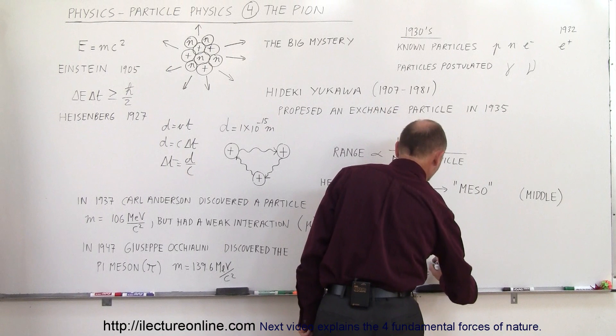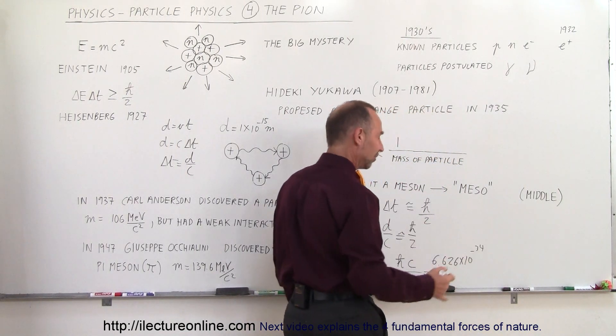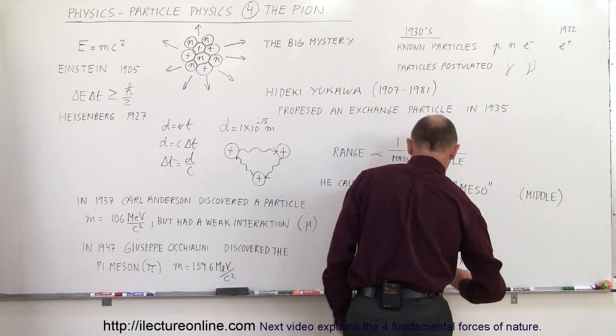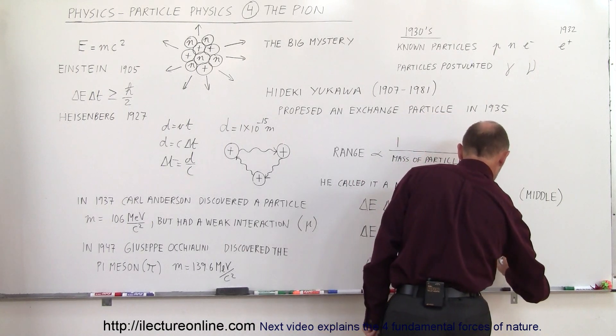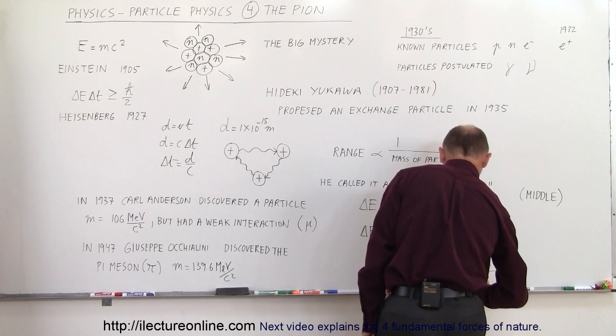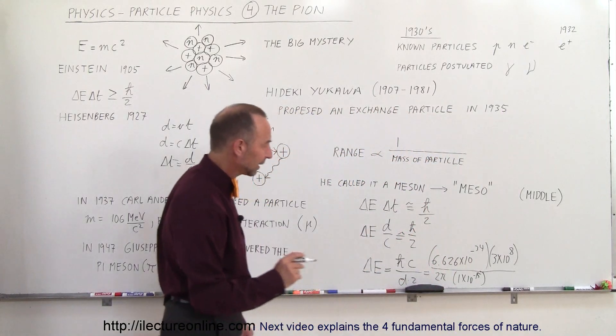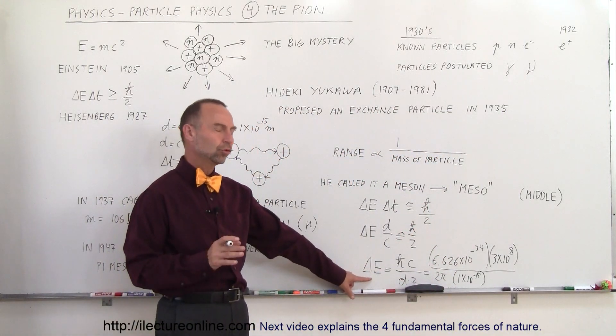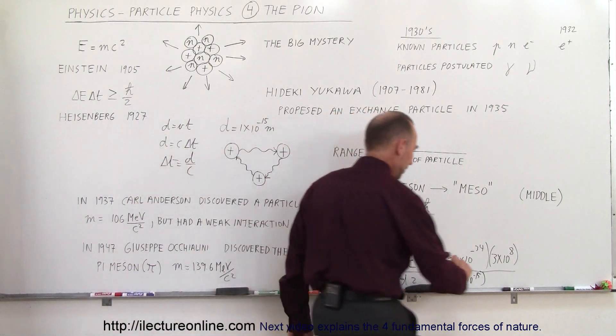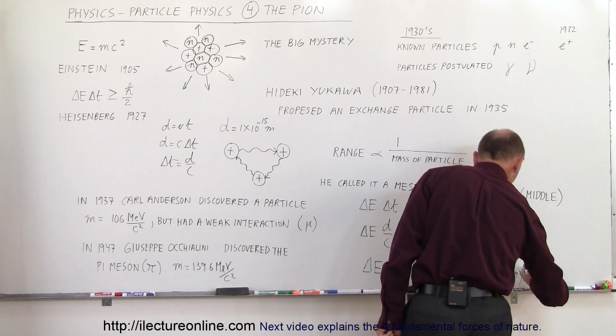h bar is equal to 6.626 times 10 to the minus 34 joules times seconds divided by 2 pi, and then we have the speed of light, which is 3 times 10 to the 8 meters per second, and then we have the distance, which is 1 times 10 to the minus 15 meters. Alright, I left the units off to make it a little bit cleaner, so now we have the energy in terms of joules, but it's better to turn the energy in terms of electron volts.